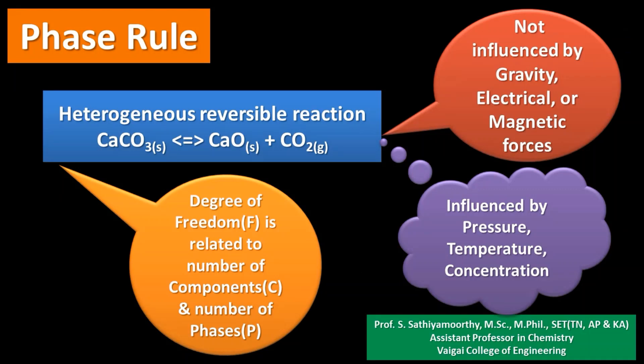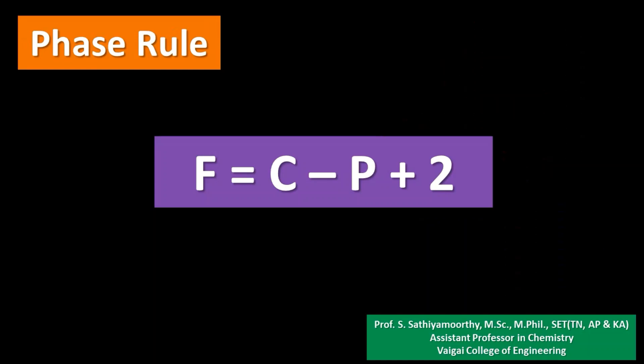Since we are dealing with heterogeneous reversible reactions, we have to cover all details about phase rule. Most chemical reactions are not influenced by gravitational, electrical, and magnetic forces, but are influenced by pressure, temperature, and concentration — these are the influencing factors of a chemical reaction. Given this, Gibbs introduced new terms: degrees of freedom, number of components, and number of phases. These terms are related by the phase rule: F = C − P + 2, where F is the number of degrees of freedom, C is the number of components, and P is the number of phases.